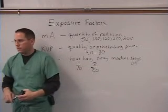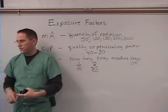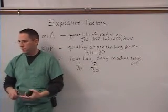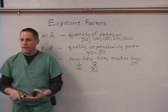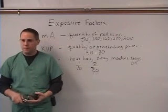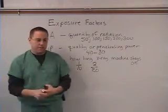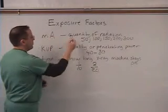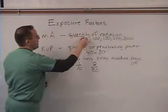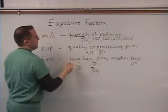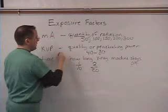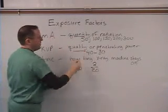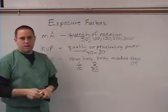So these are called the exposure factors: your MA, KVP, and time. The key to remember is that MA represents the quantity — the amount of radiation — and KVP is the quality.